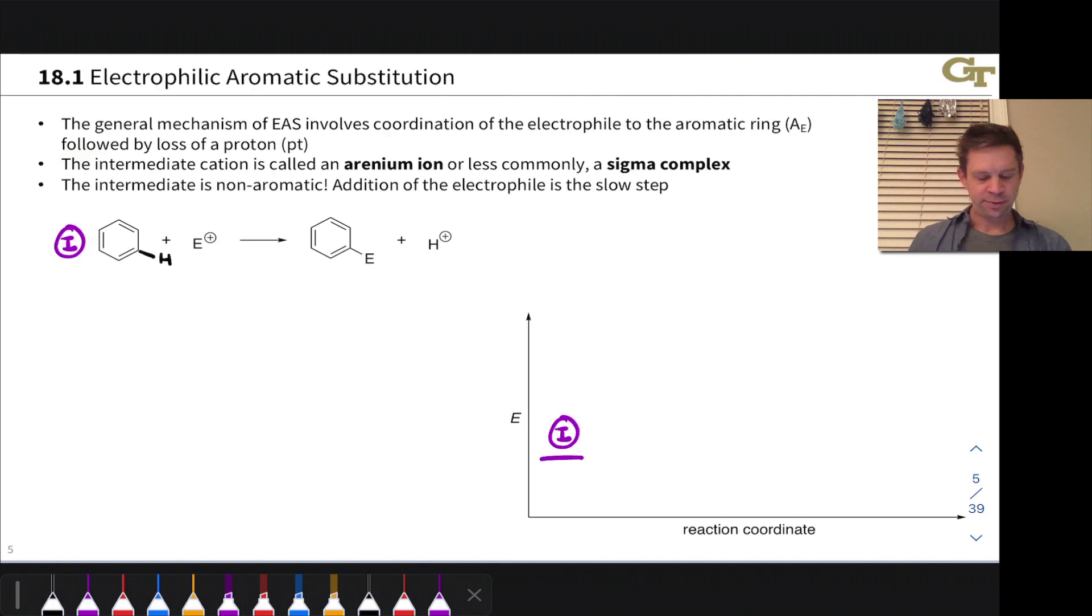In the first step, the electrophile coordinates to or associates with a carbon in the benzene ring. The curved arrows for this look like this: a pair of pi electrons in benzene heads toward the electrophile, and we get a new carbon E bond.